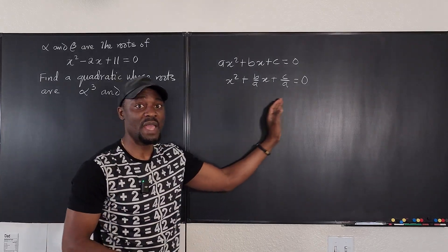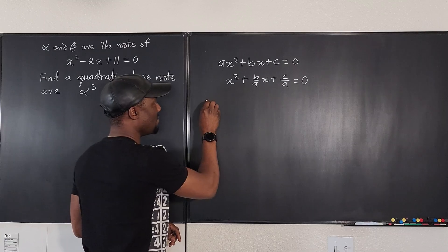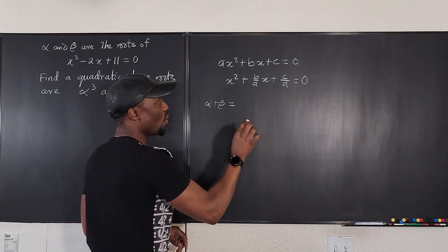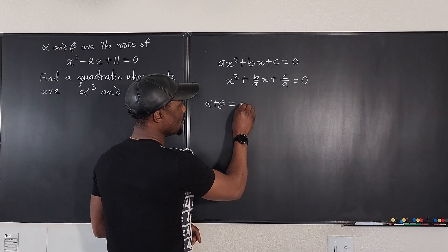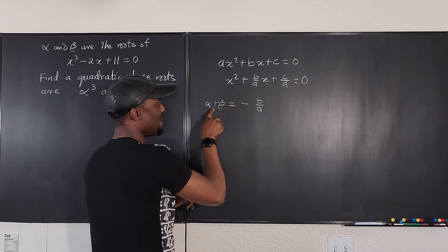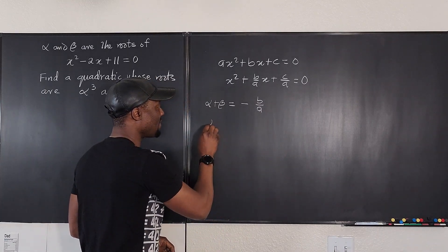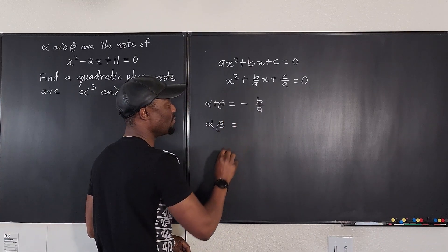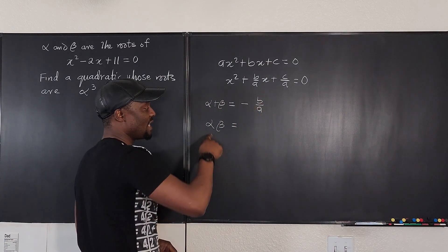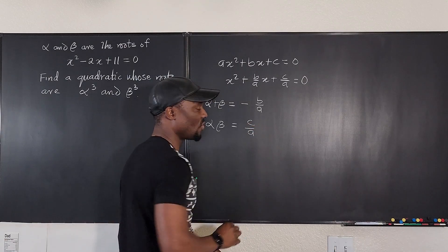Now we can draw conclusions. The sum, alpha plus beta, is always equal to negative b over a. And alpha beta — the product of the roots — is always equal to c over a. Always.